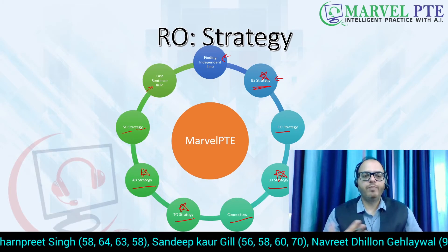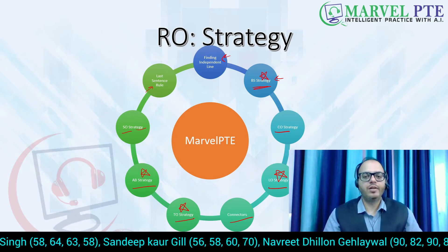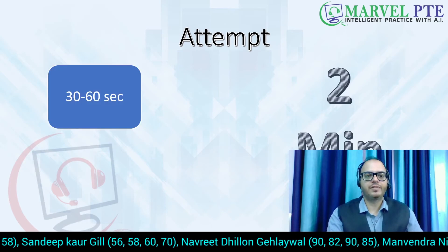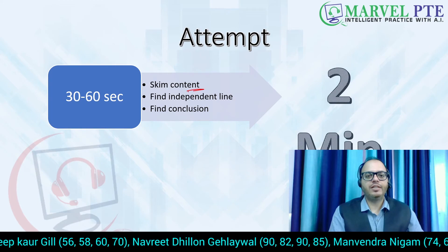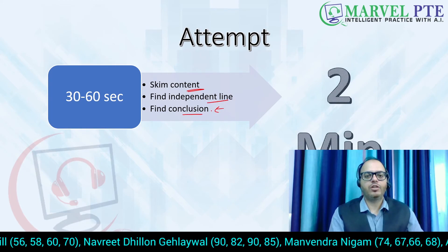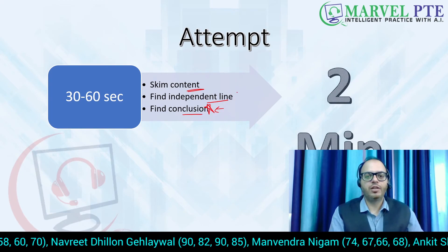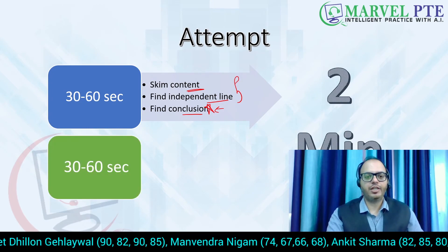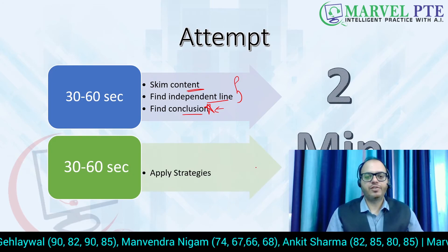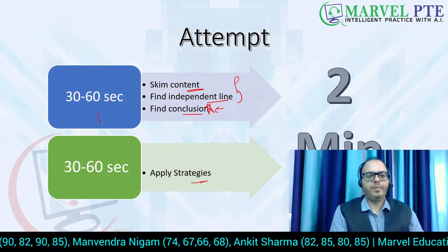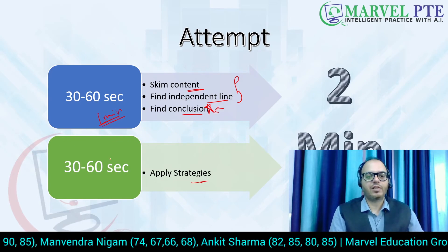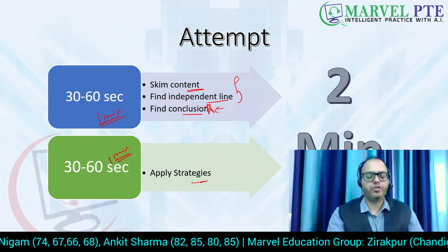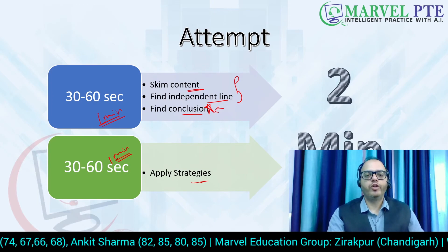Always remember you have two minutes. In the first 30 to 60 seconds, you are going to skim the content, find the independent line, and optionally find the conclusion line. Finding the independent line and skimming should be done in the first 30 to 60 seconds. Then in the next 30 to 60 seconds, apply your strategy. You have about one minute to apply the strategies we have taught you, and you can easily solve your reorder paragraphs within two minutes.